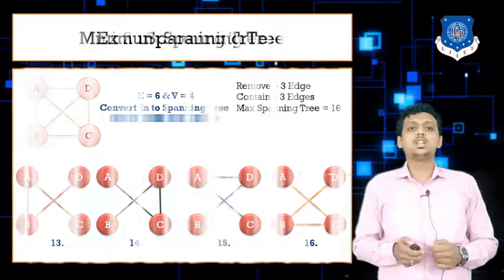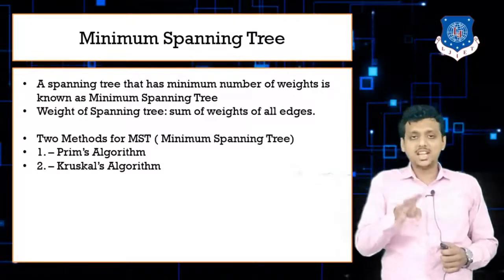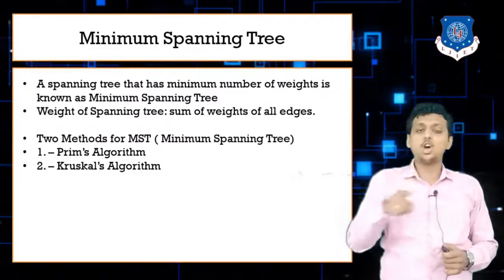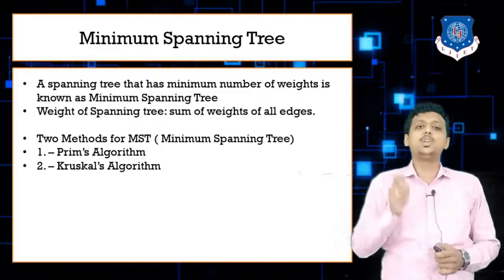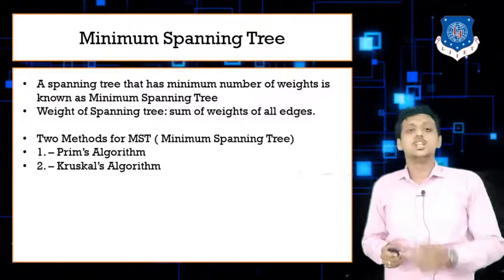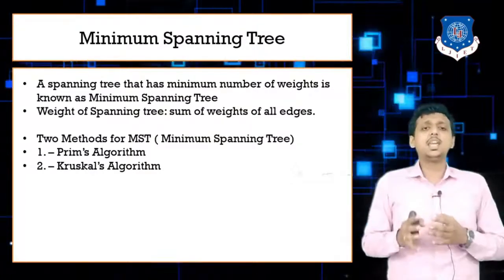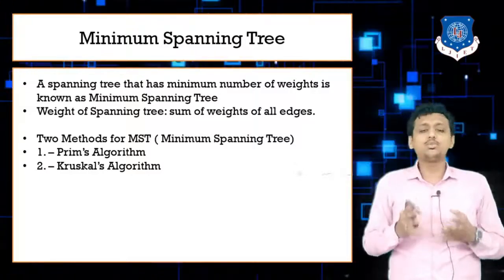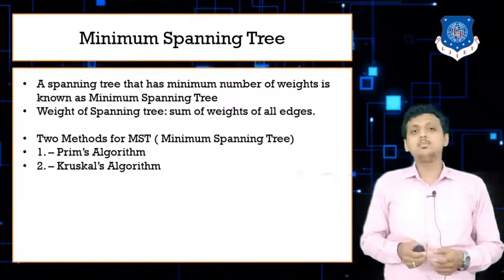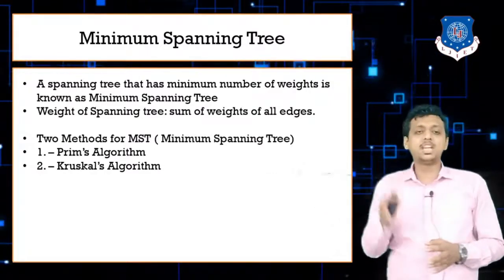Now let us take a look at the minimum spanning tree. From 4 vertices you can make 16 spanning trees total. Out of all 16 spanning trees, we need to find the spanning tree with minimum weight, and that spanning tree with minimum weight is known as the minimum spanning tree. To find the minimum spanning tree we have 2 different methods: Prim's algorithm and Kruskal's algorithm. Today in this lecture we are going to learn about Prim's algorithm.